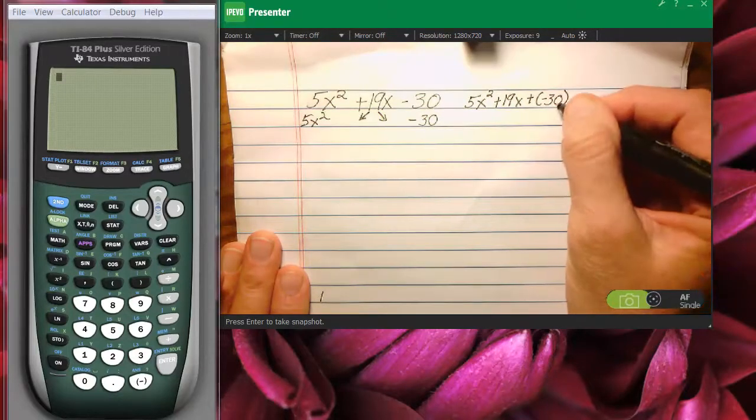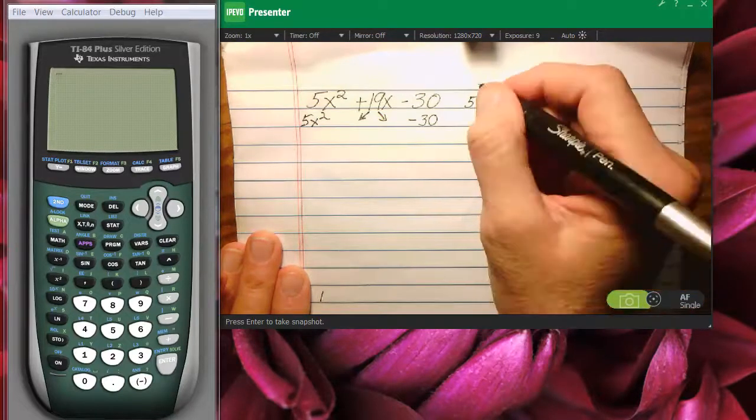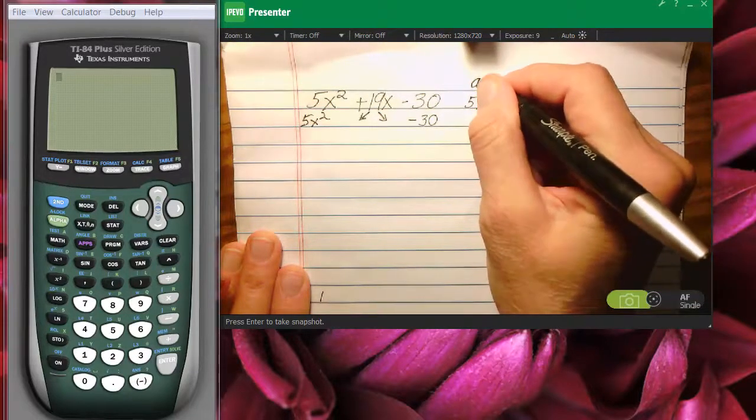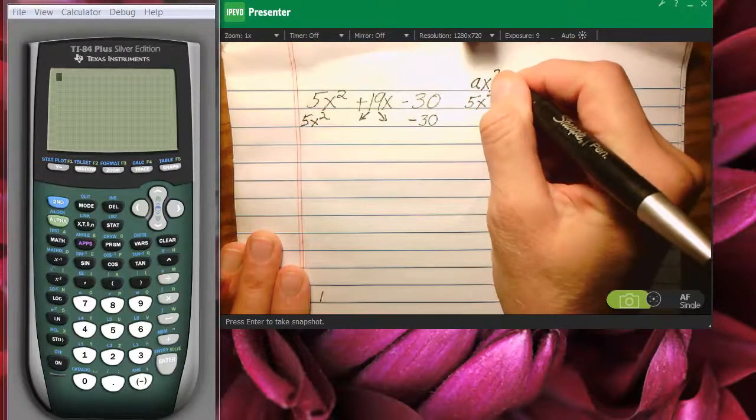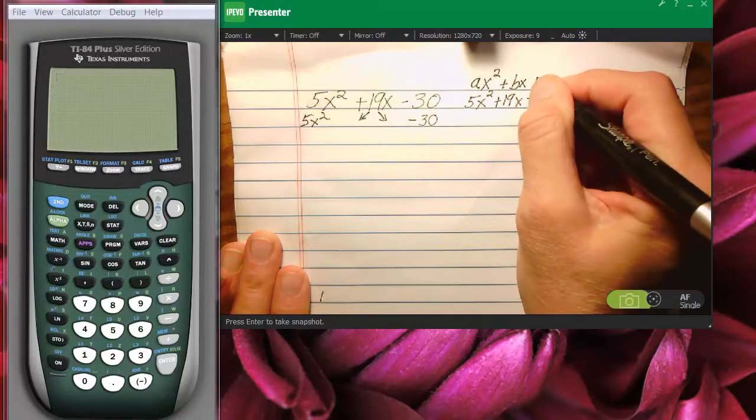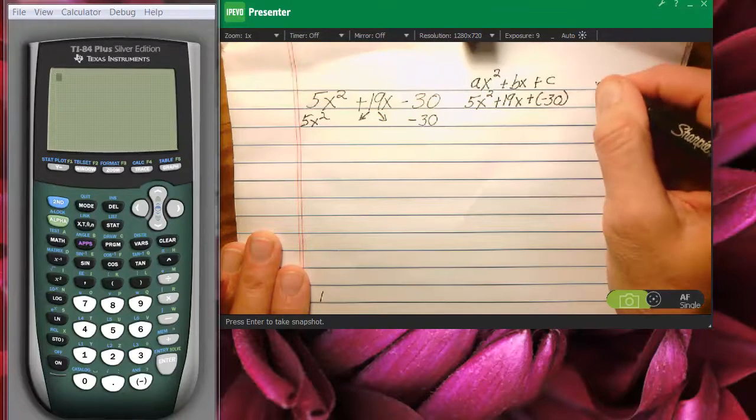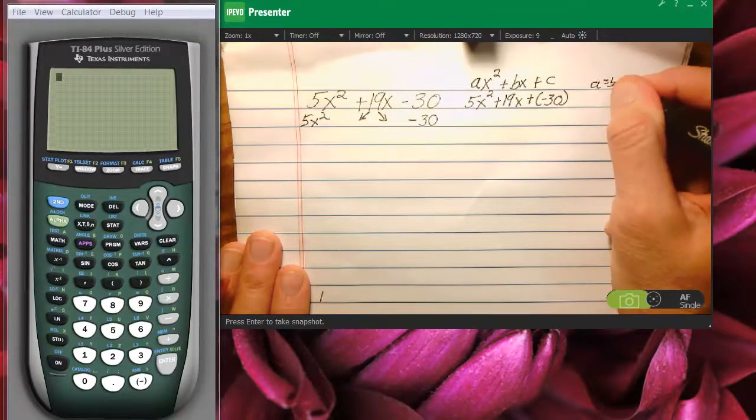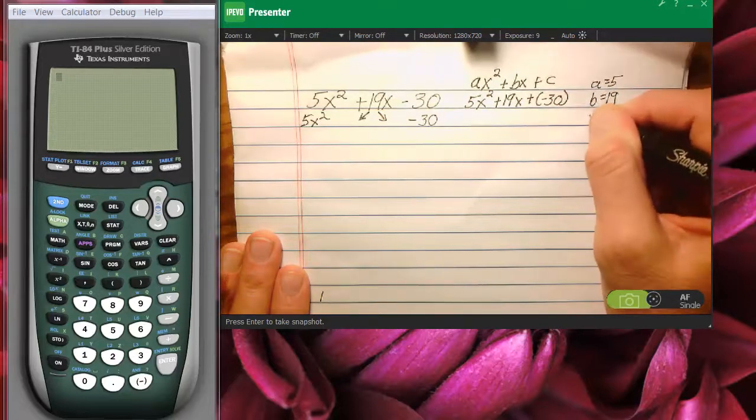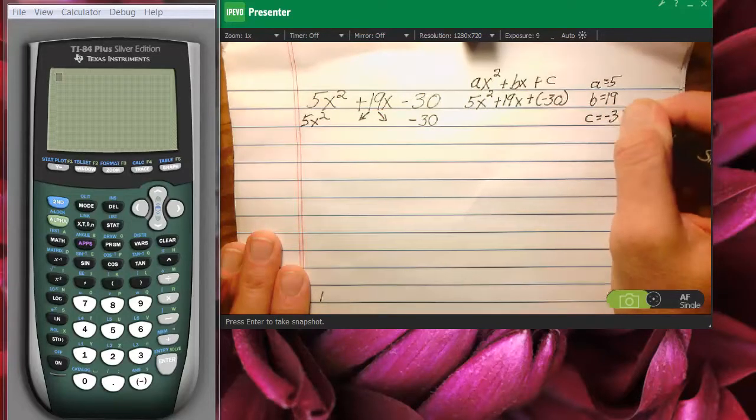This is so that we will know that the general way of writing, the general formula for a quadratic trinomial is ax squared plus bx plus c. So our a number is 5, our b number is 19, and our c number is negative 30.